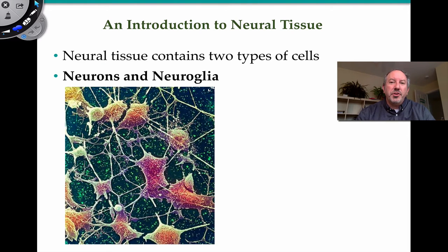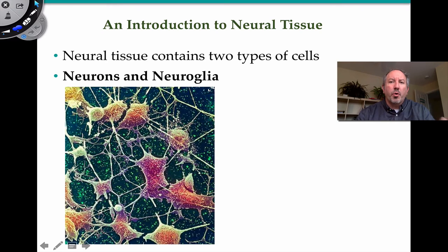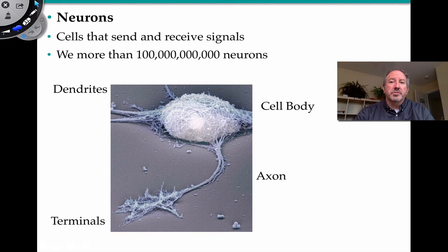There are two main types of cells involved in neural tissue. Those are neurons, shown in these diagrams as large cell bodies, and then there are supportive cells called neuroglia cells. This particular video is about both kinds of cells.